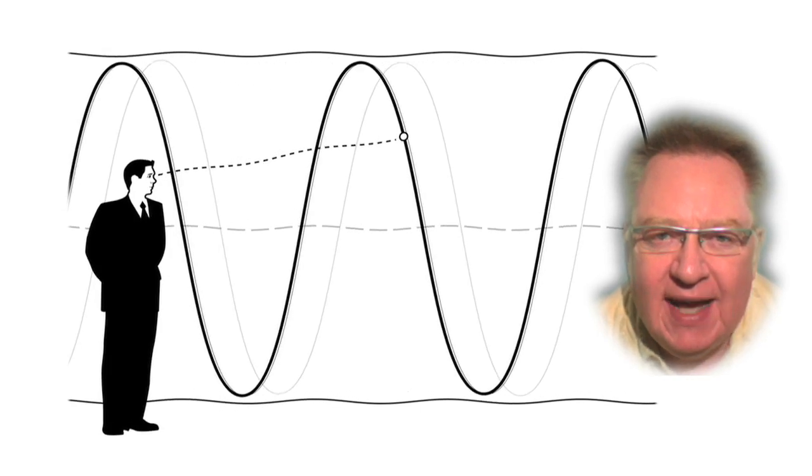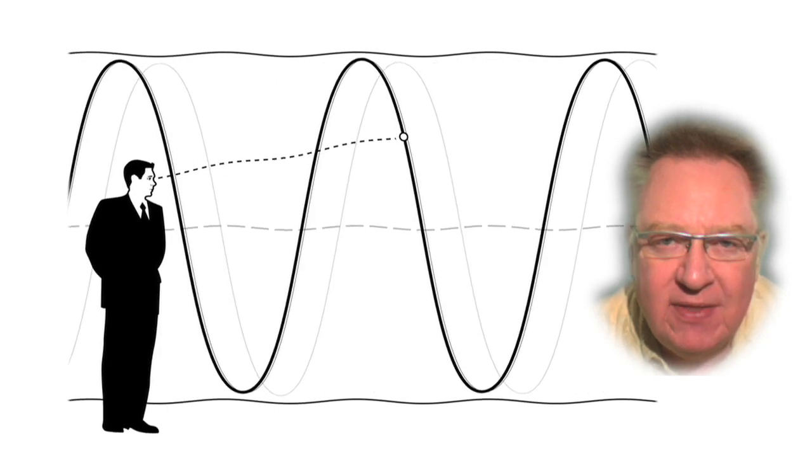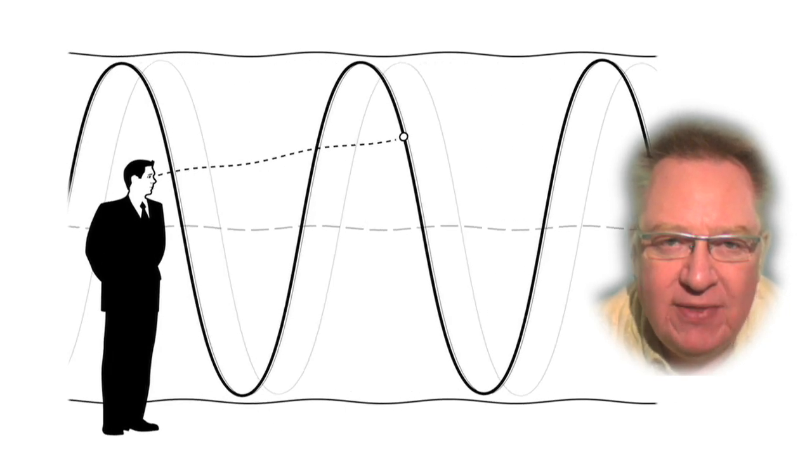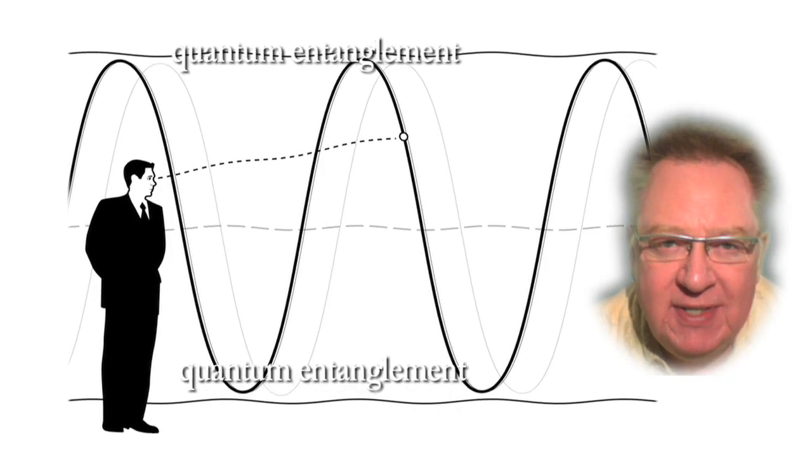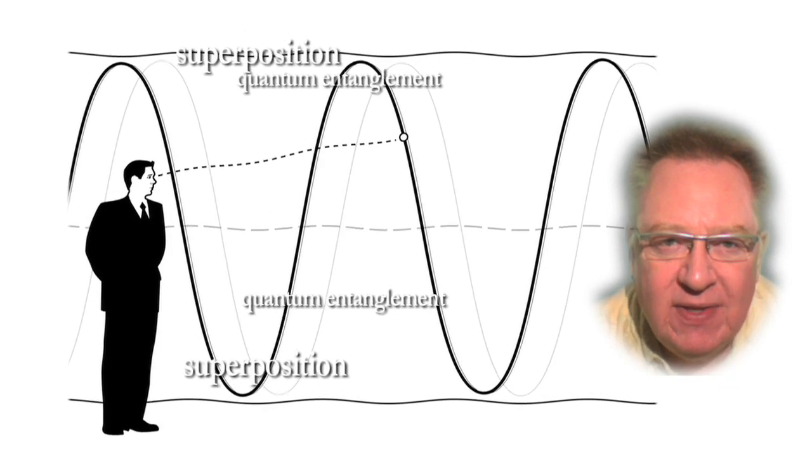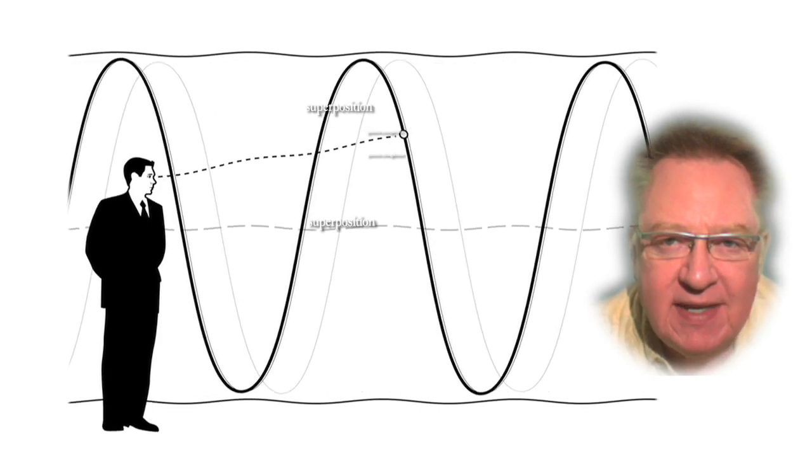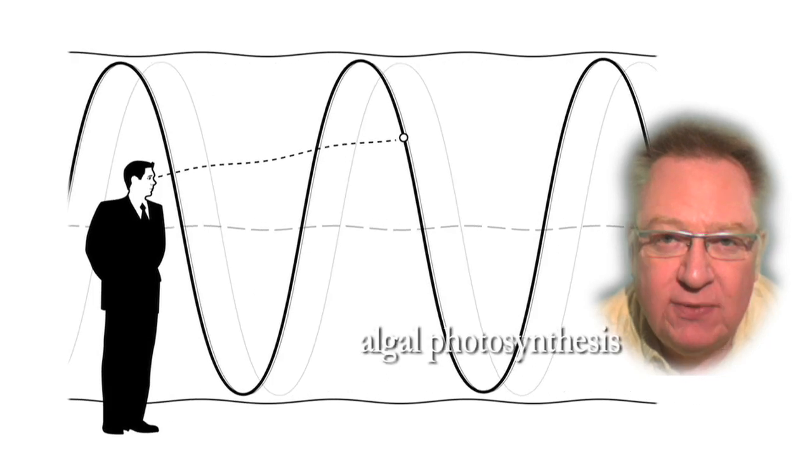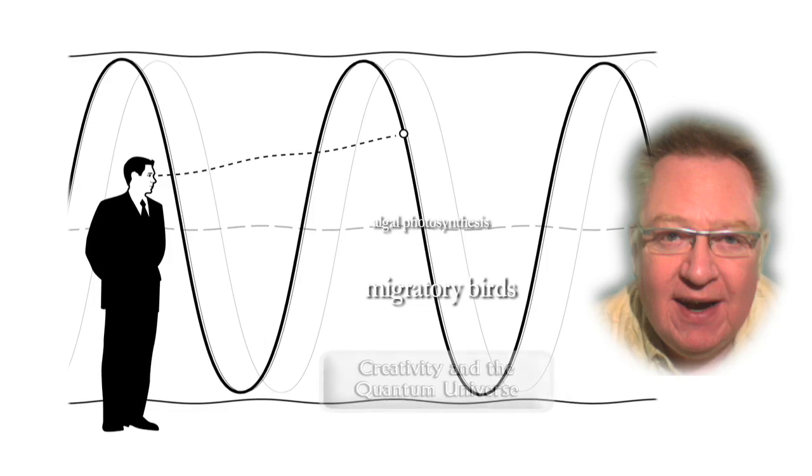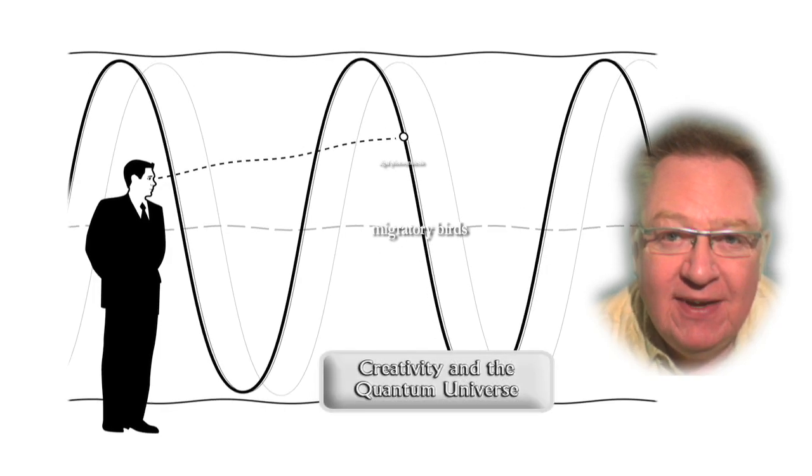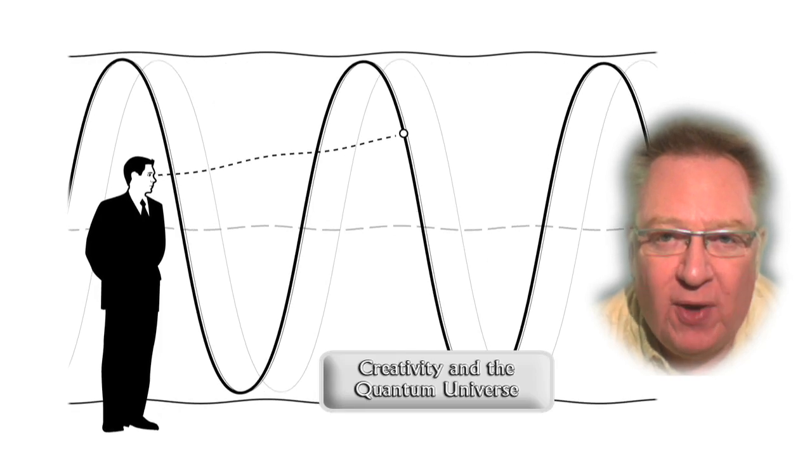First of all, the idea that the quantum and the macro worlds are in some way completely separate, and that there's a dividing line where we are either in one realm or the other, is starting to fall by the wayside. Demonstrations of quantum entanglement and superposition with increasingly large molecules move us towards understanding that this is a continuum. And research indicating that algal photosynthesis and even migratory birds' navigational abilities are using quantum effects argue against the old idea that our warm and wet macro world is completely separate from the quantum one.